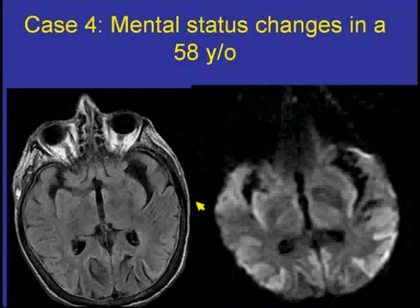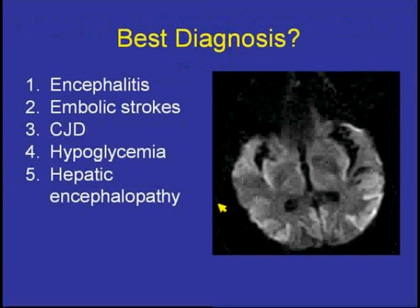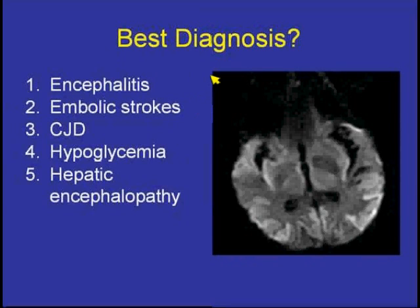Diffusion-weighted image. Best diagnosis for this 58-year-old with mental status changes. Would you say that this is most likely encephalitis, an embolic stroke, Creutzfeldt-Jakob disease, hypoglycemia, or hepatic encephalopathy? Let's get the timer going.